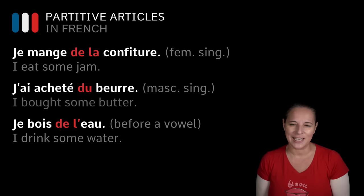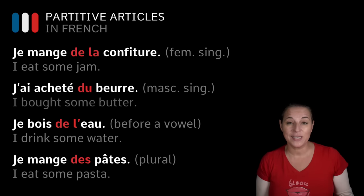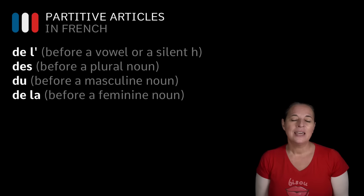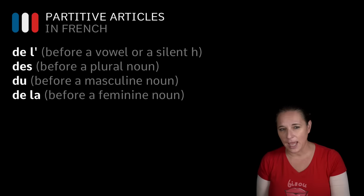'Je mange des pâtes' — I eat some pasta. Now pasta in French is plural, so we say 'pâtes'. In this case, we use DES. PAT is feminine plural, but regardless, we use DES. Now, whereas the partitive 'some' is not always required in English, it is always needed in French — you cannot omit it. You've got to use it. Remember: DE L', DU, DE LA, DES — always.